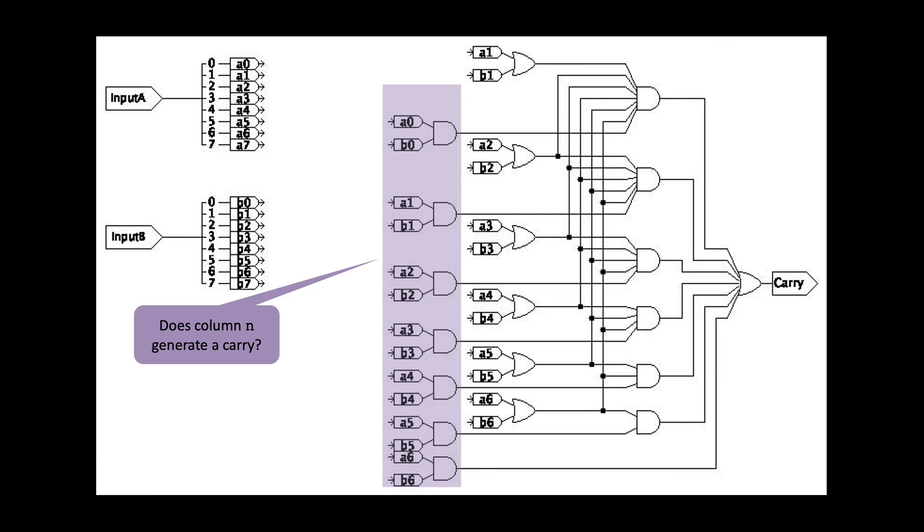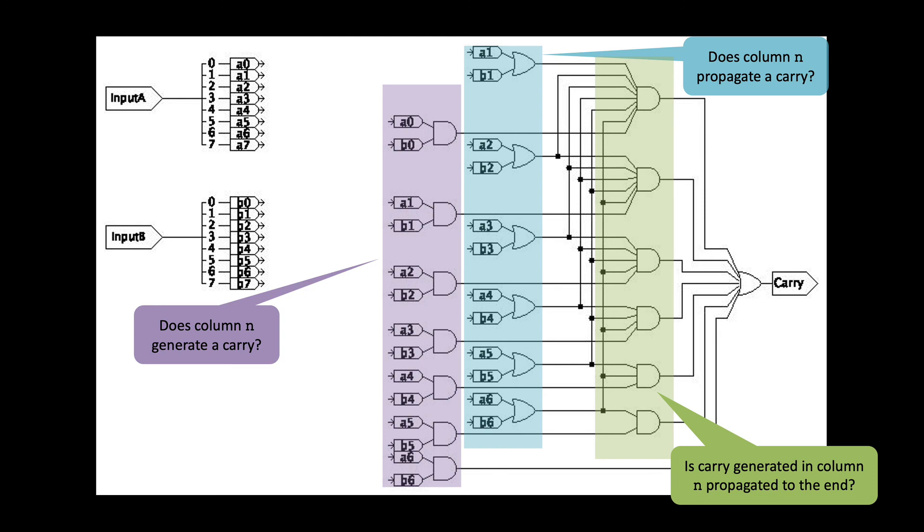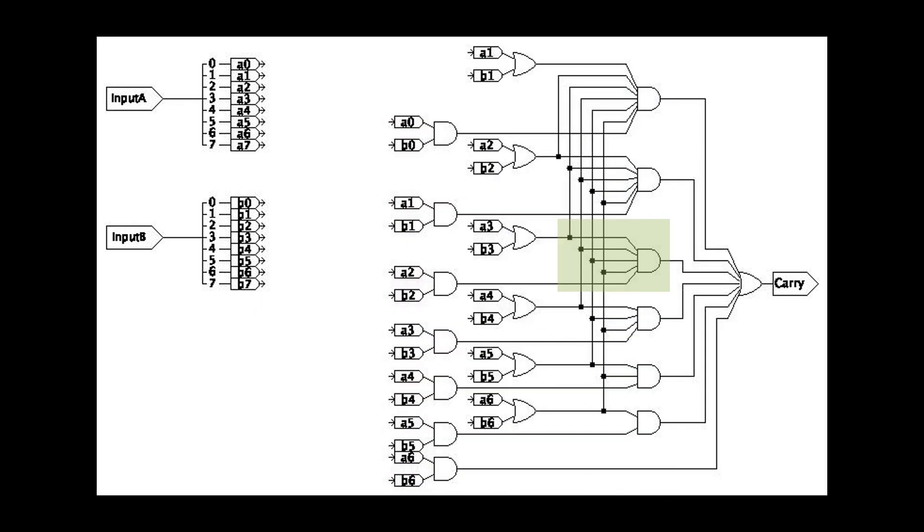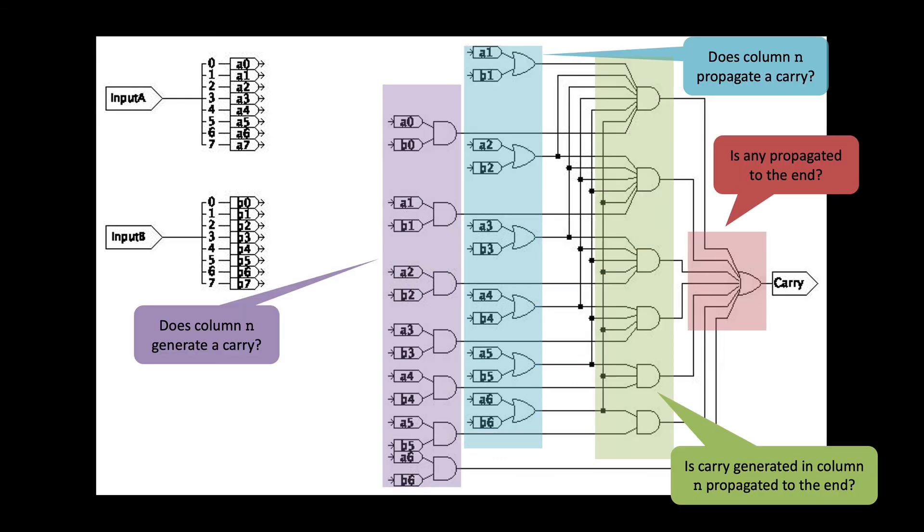This set of AND gates determines which columns generate a carry. This is just the AND gate for all the G_ns. Similarly, this set of OR gates determines which columns propagate carries. These are just the OR gates for all the P_ns. The key part of this algorithm is done by these AND gates here. These gates determine whether a generated carry is propagated all the way to the left. For example, let's focus on this specific AND gate. It returns TRUE if column 2 generates a carry and then columns 3, 4, 5, and 6 all propagate. And then the OR gate at the end tells us if any of the generated carries are propagated all the way to the end, thereby creating a carry into the particular column.